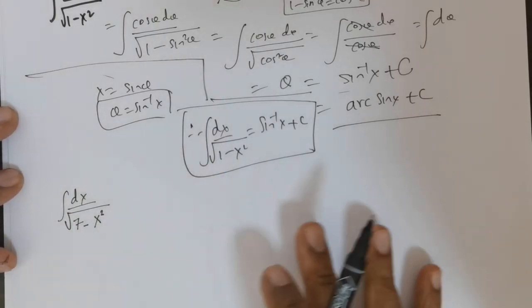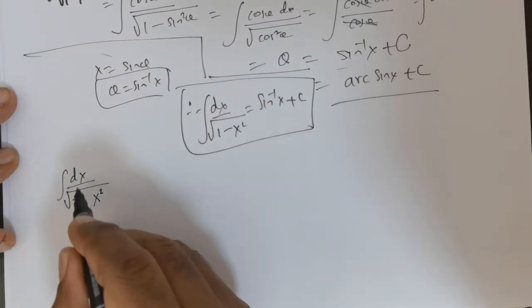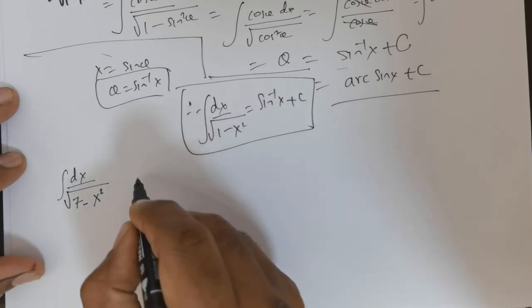Welcome students. This is an interesting question. We are expected to integrate dx over the square root of 7 minus x squared.